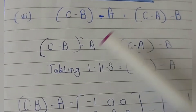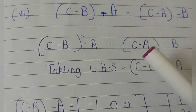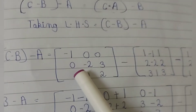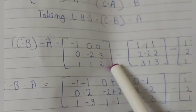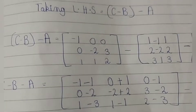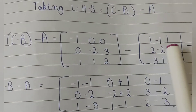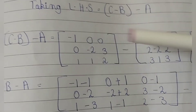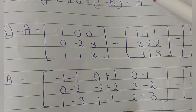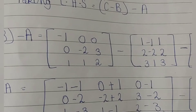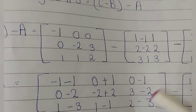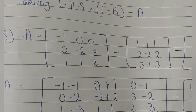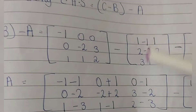I will take the left hand side, which is (c minus b) minus a. We have c value: minus 1, 0, 0, 0, minus 2, 3, 1, 1, 2. B value is: 1, minus 1, 1, 2, minus 2, 2, 3, 1, 3. First we will solve the inner bracket c minus b, giving us: minus 1, 2, 3, 2, 3, 1, 1, minus 1, 0.